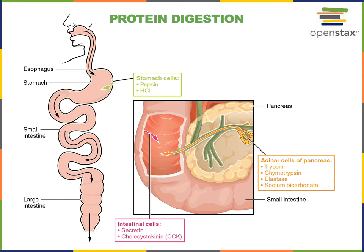Trypsin is a protease that can contribute to hydrolysis of polypeptides, but trypsin will also activate other inactive precursors such as chymotrypsinogen, proelastase, and procarboxypeptidase. Trypsin activates chymotrypsinogen to form chymotrypsin, and trypsin activates proelastase to form elastase. Trypsin, chymotrypsin, and elastase all catalyze hydrolysis of peptide bonds between specific amino acids, enabling polypeptides to be broken down into shorter peptides.